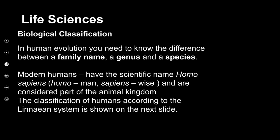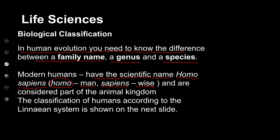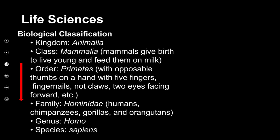For human evolution, you need to know the difference between a family name, a genus, and a species. Modern humans have the scientific name Homo sapiens — homo means man and sapiens means wise. The classification of humans is according to the Linnaean system, developed by Carl Linnaeus. We can see this classification on the next slide.